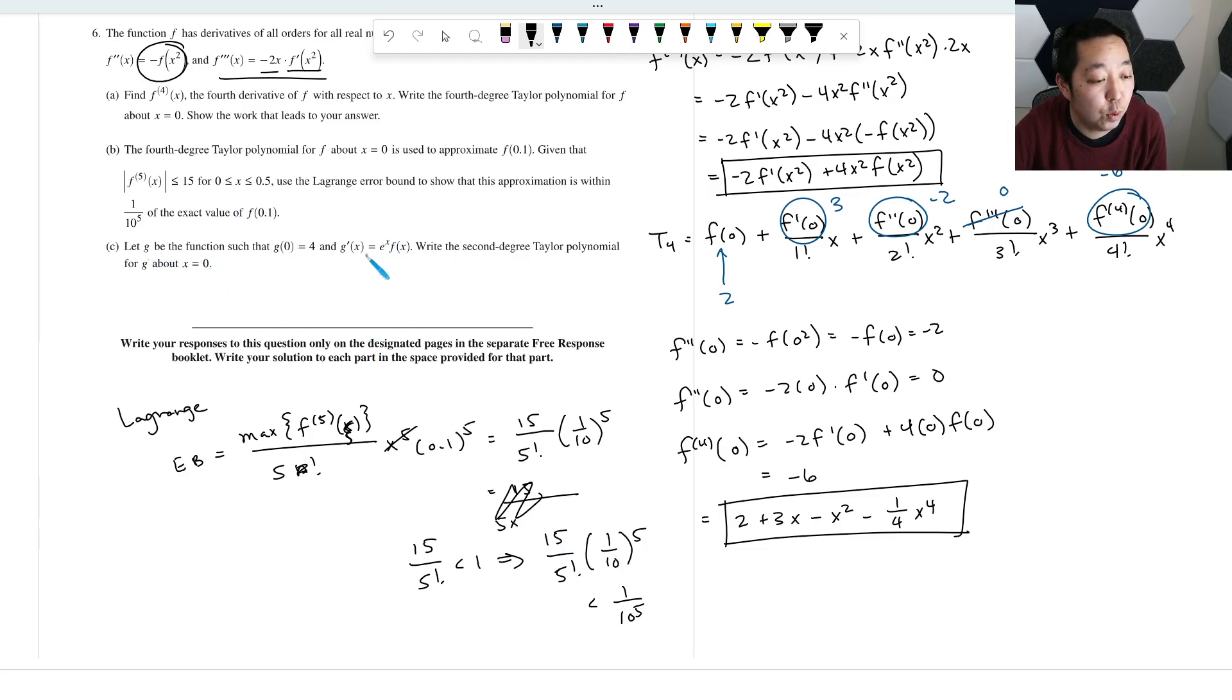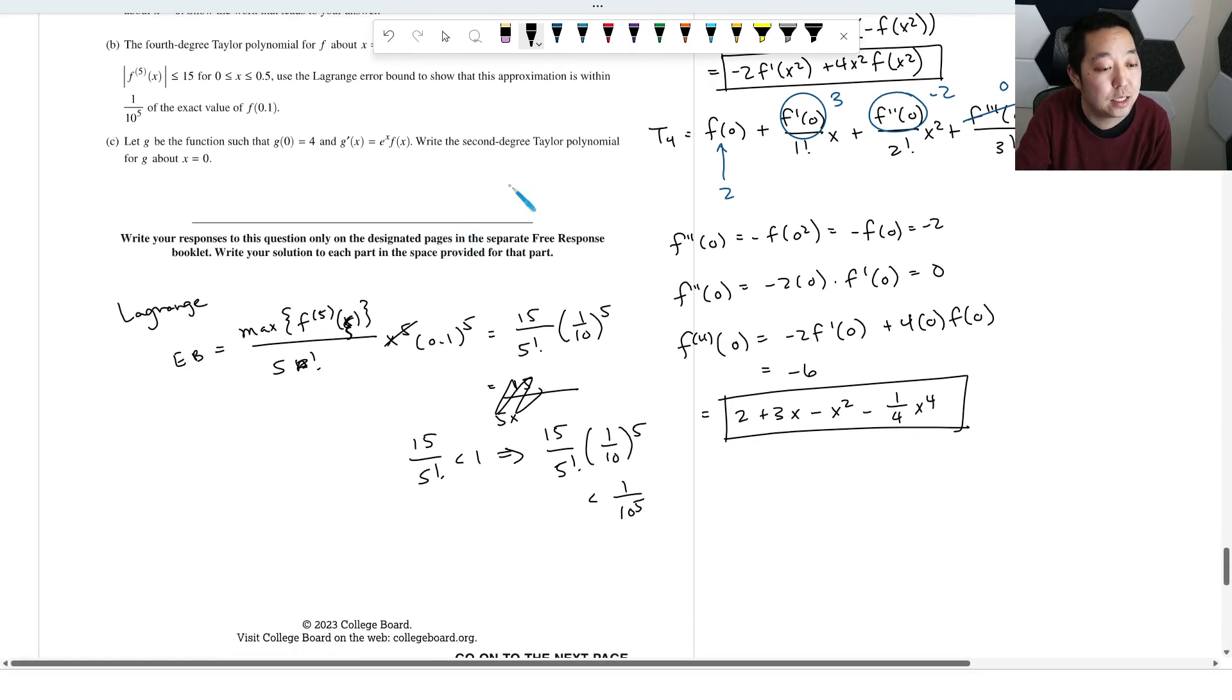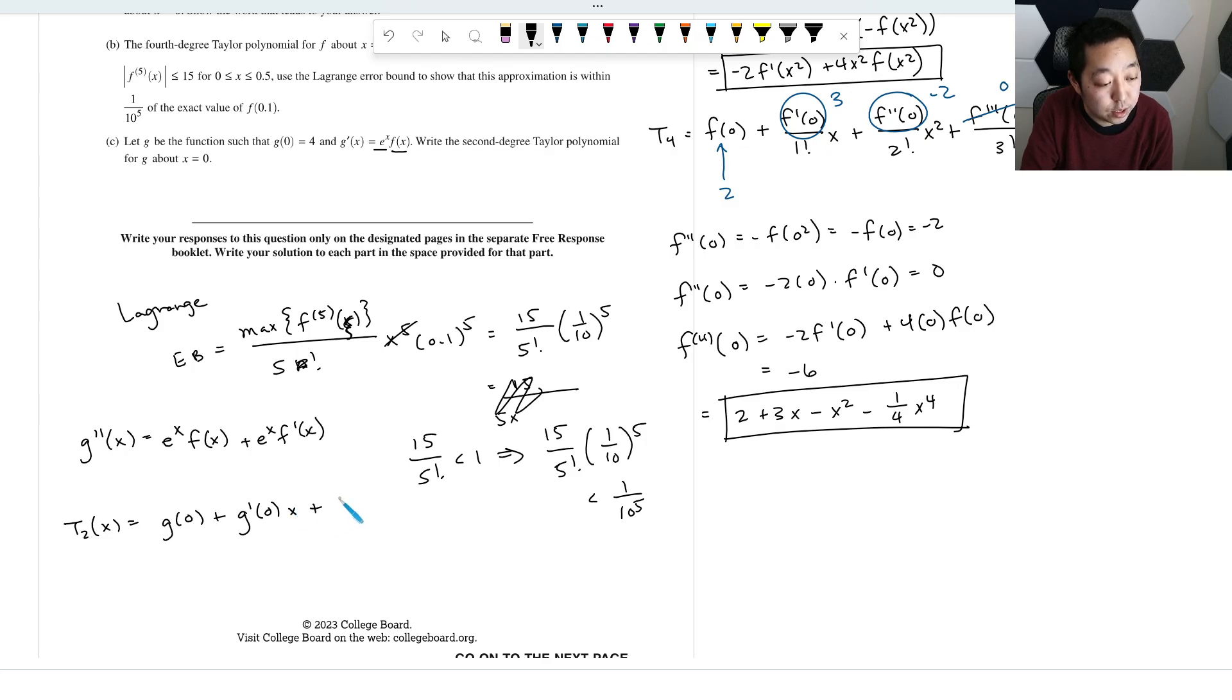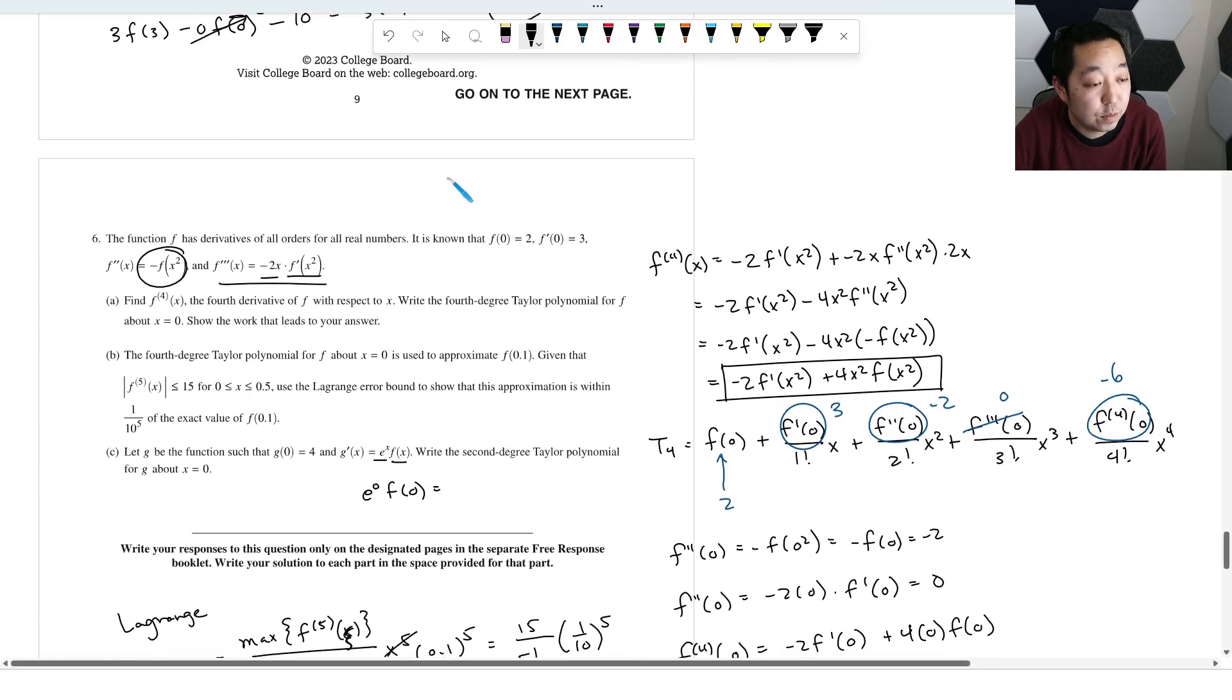Let G be the function such that G(0)=4 and G'(x)=e^x·f(x). Write a second degree Taylor polynomial for G about x equals 0. So second degree means they just want you to do the next term. So G''(x) is going to be product rule. You do e^x times f(x) because derivative of e^x is e^x, plus e^x times f'(x). And then our second degree Taylor polynomial is going to be G(0) + G'(0)x + G''(0)/(2!) x².